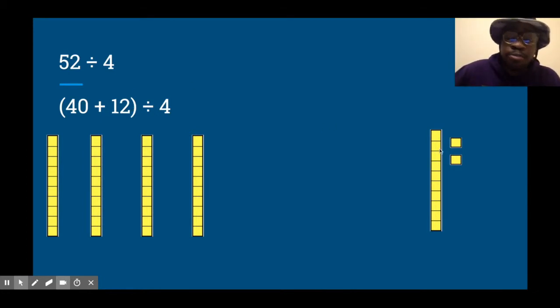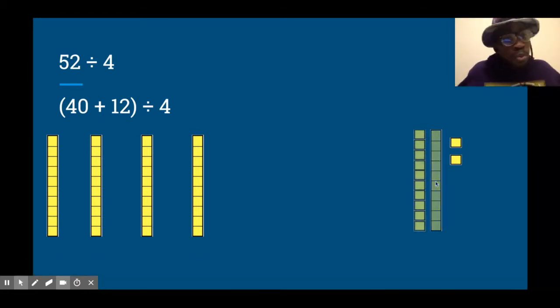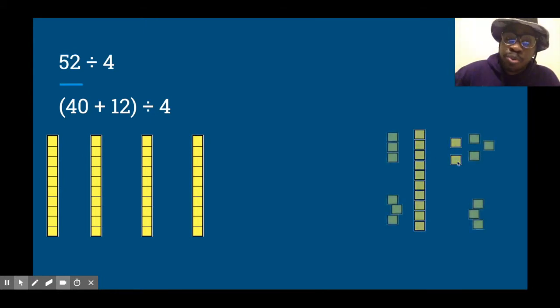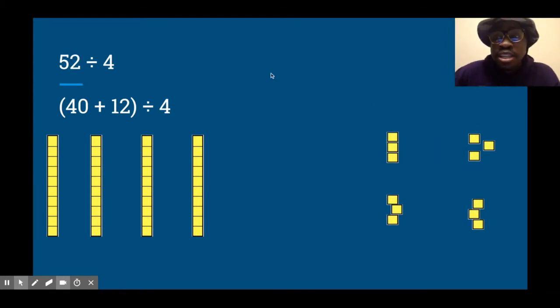We have 12, but wait a minute, I can't divide it like this, so I'm going to regroup it into ones. Now that I have 12 ones, 12 divided by 4 is 3 because 3 times 4 is 12. So 40 divided by 4 is 10, 12 divided by 4 is 3, put them together we have 4 groups of 13. 52 divided by 4 is 13.